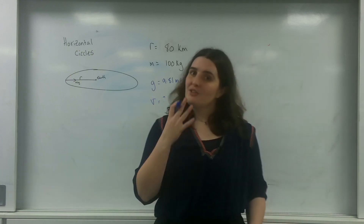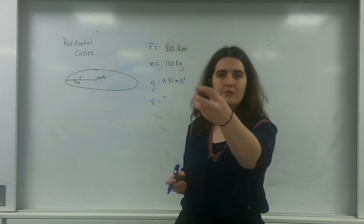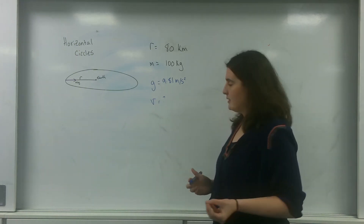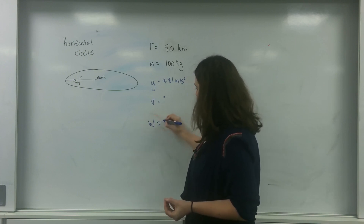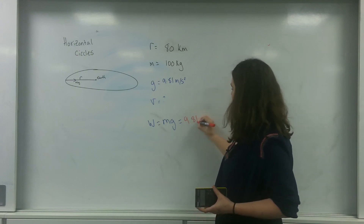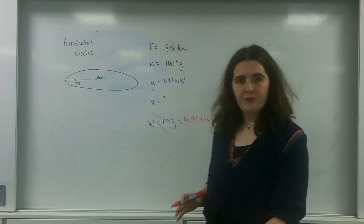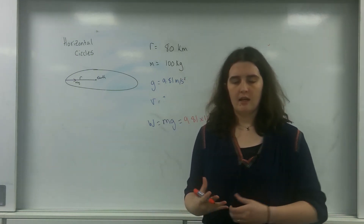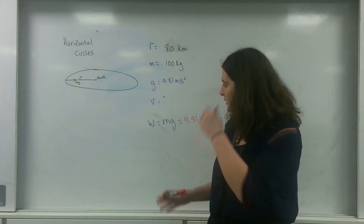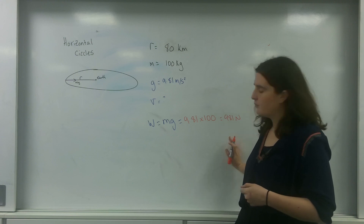The force that is causing this circular motion is the weight — basically the mass of the satellite being attracted to the mass of the Earth. So the force causing this is the weight, and of course weight is Mg. In this case that is 9.81 times 100, so it's 981 newtons. That is the force causing this circular motion, and it is the only force. Therefore this is the resultant force that I'm going to use in my circular motion formulae.